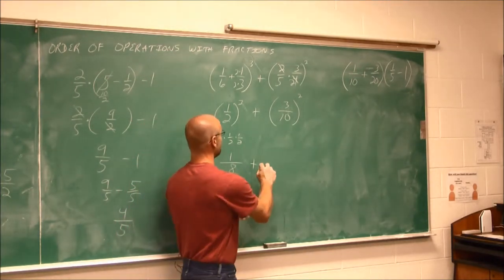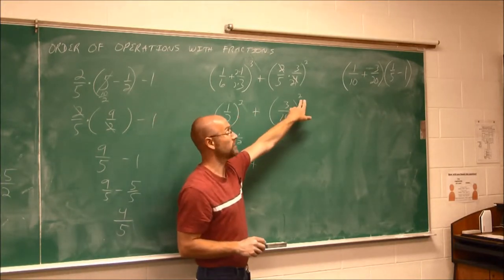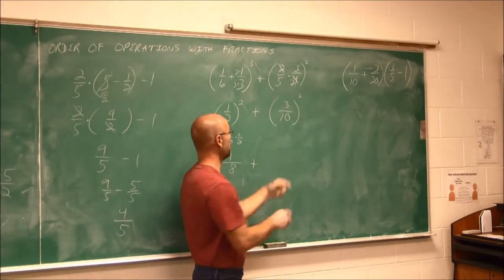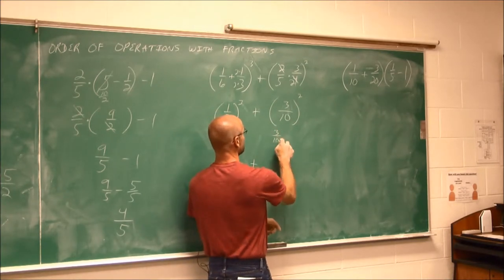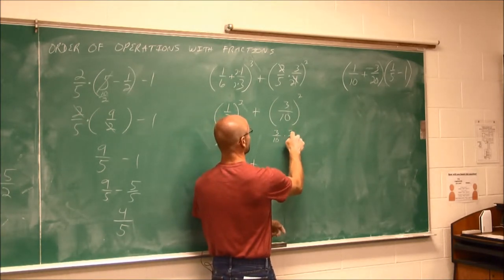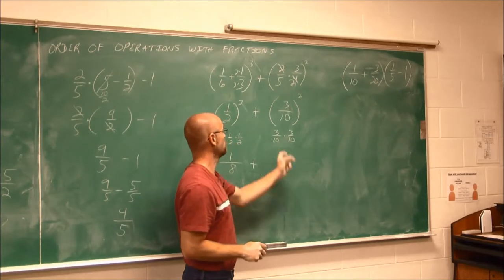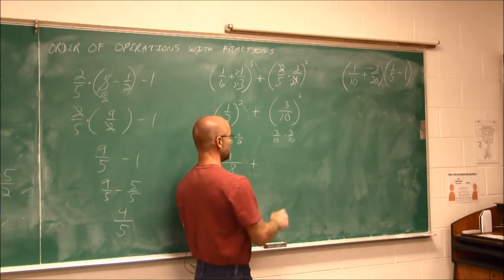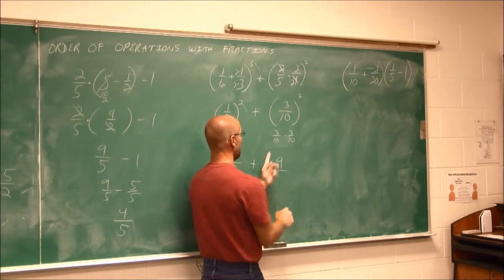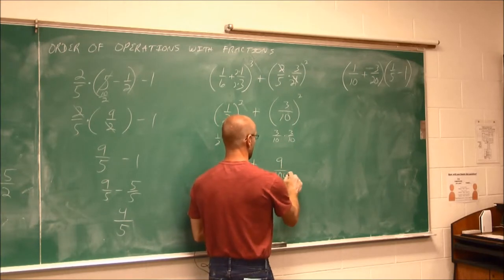So I've assessed that exponent. Well, I still have this exponent, so I need to assess that. 3 tenths squared just means I need two factors of 3 tenths. So 3 times 3 is 9, and 10 times 10 is 100.